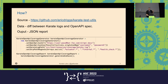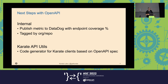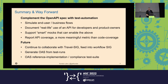This is the source code for how to use it — it's on GitHub. Next steps: we're going to be doing more with our metrics to understand our endpoint coverage. All this data is tagged by org and repo. I'm planning to do more with the Karate API utils — it's based on open source — and I want to do a code generator for Karate clients, which is something I've been pitching to Peter very much. That would be really good to have.